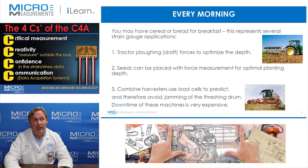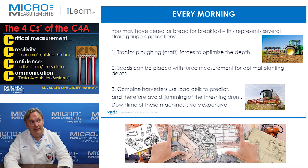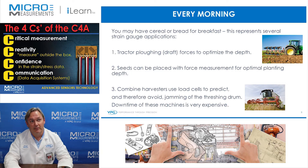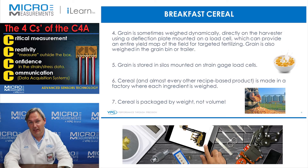You may have cereal or bread for breakfast in the morning, and this represents several strain gauge applications. Tractor plowing forces are measured to optimize the depth, and seeds can be placed with force measurement for optimal planting depth. Combined harvesters use load cells to predict and therefore avoid jamming of the threshing drum — downtime of these machines can be very expensive. Grain is sometimes weighed dynamically directly on the harvester using a deflection plate mounted on a load cell, which can provide an entire yield map of the field for targeted fertilizing. Grain is also weighed in a grain bin or trailer.